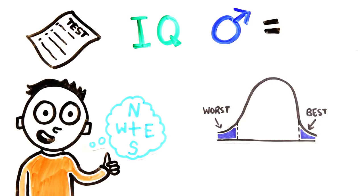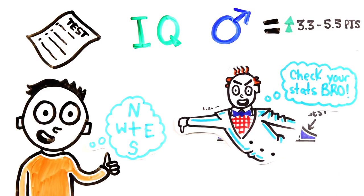One meta-analysis of 22 studies did find men to be 3.3 to 5.5 IQ points above women, but this study has been called into question by academics who found the methodology flawed.